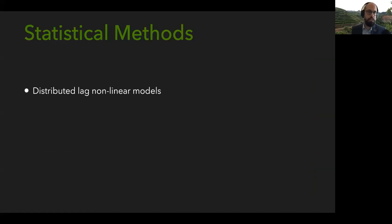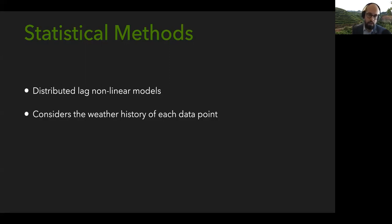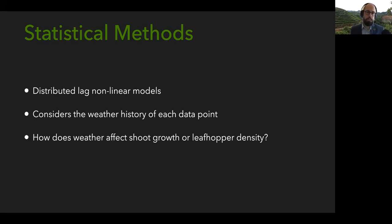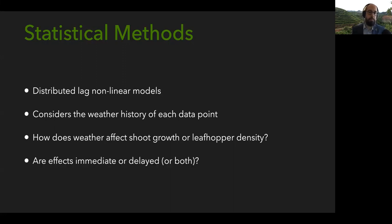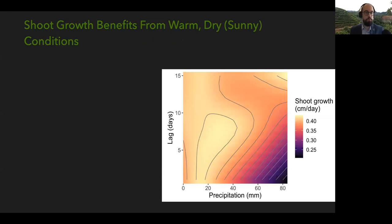For the analysis, I used a distributed lag non-linear model — a relatively complicated technique — because it allows for taking potential lag effects into account. Each data point has a unique weather history: the number of leafhoppers on a plant on a particular day could be a function of the weather yesterday, two days ago, three days ago, and so on. This technique fits a spline to the relationship between weather and shoot growth or leafhopper density, and also fits a spline back in time to account for the possibility of delayed effects.